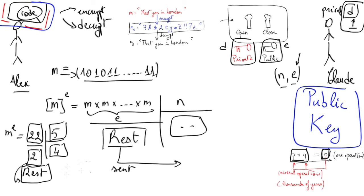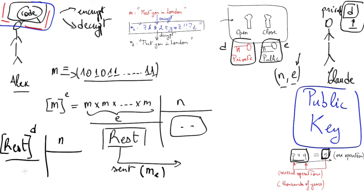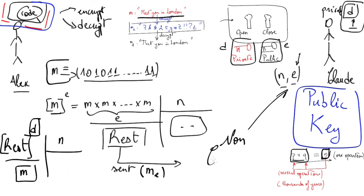When Claude receives the rest — which appears as random symbols meaningless to the public — his computer multiplies the rest by itself D times, then divides by N. Thanks to Euler's theorem, the remainder of this division is nothing less than M itself, the original message. So the secret of public key encryption is that taking the remainder of (M^E divided by N), raising it to the power D, and dividing by N again, gives back the initial message — 'meet you in London.'